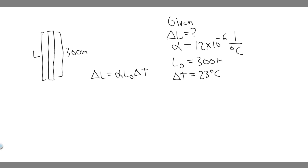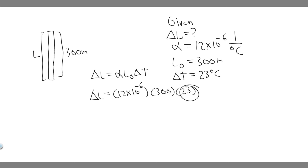Now we've got everything we need, we can just plug in. Delta L equals alpha, which is 12 times 10 to the minus 6, times the initial length of 300 meters, times the change in temperature of 23. Take out your calculator: 12 times 10 to the minus 6, multiply it by 300, multiply it by 23.